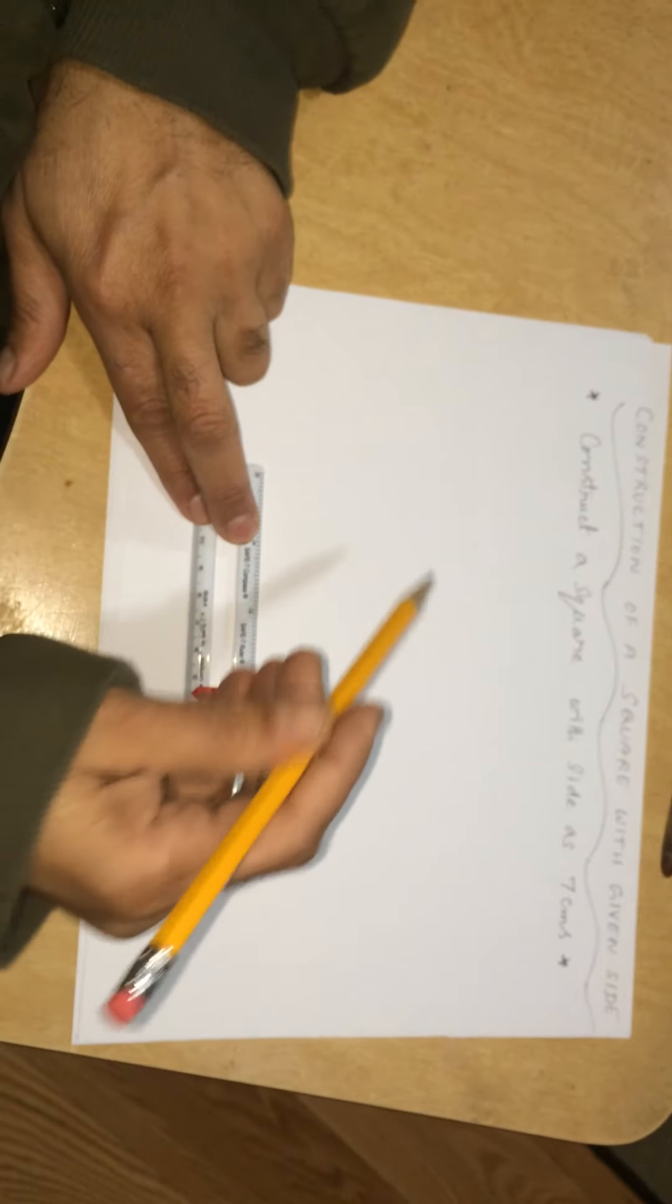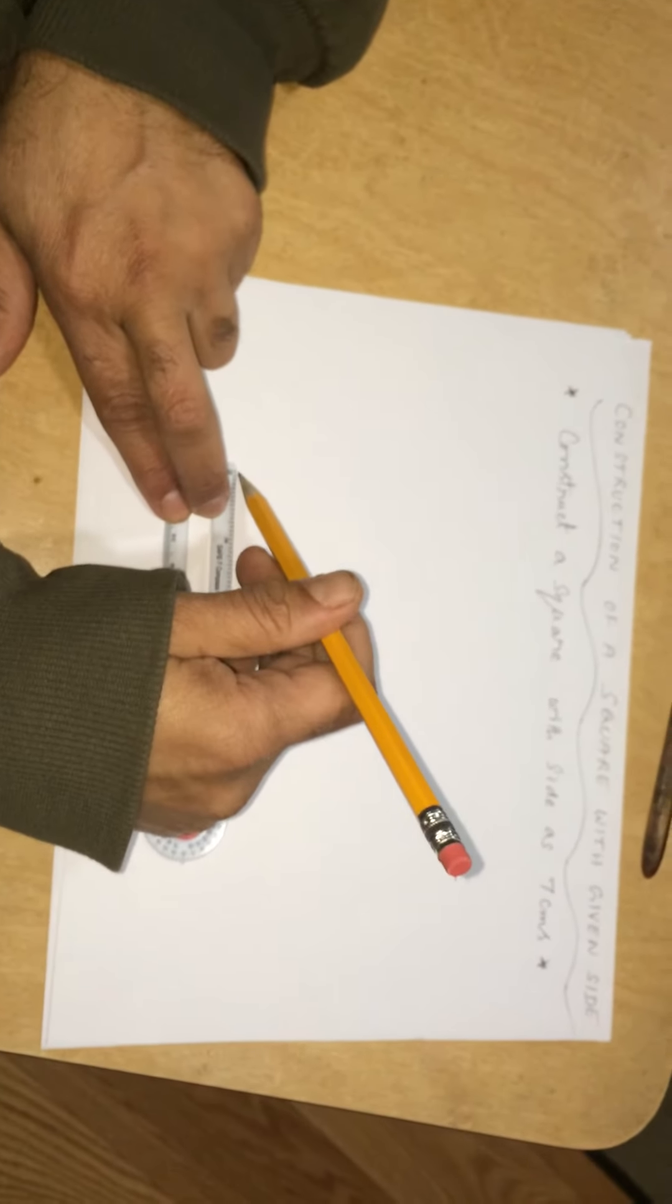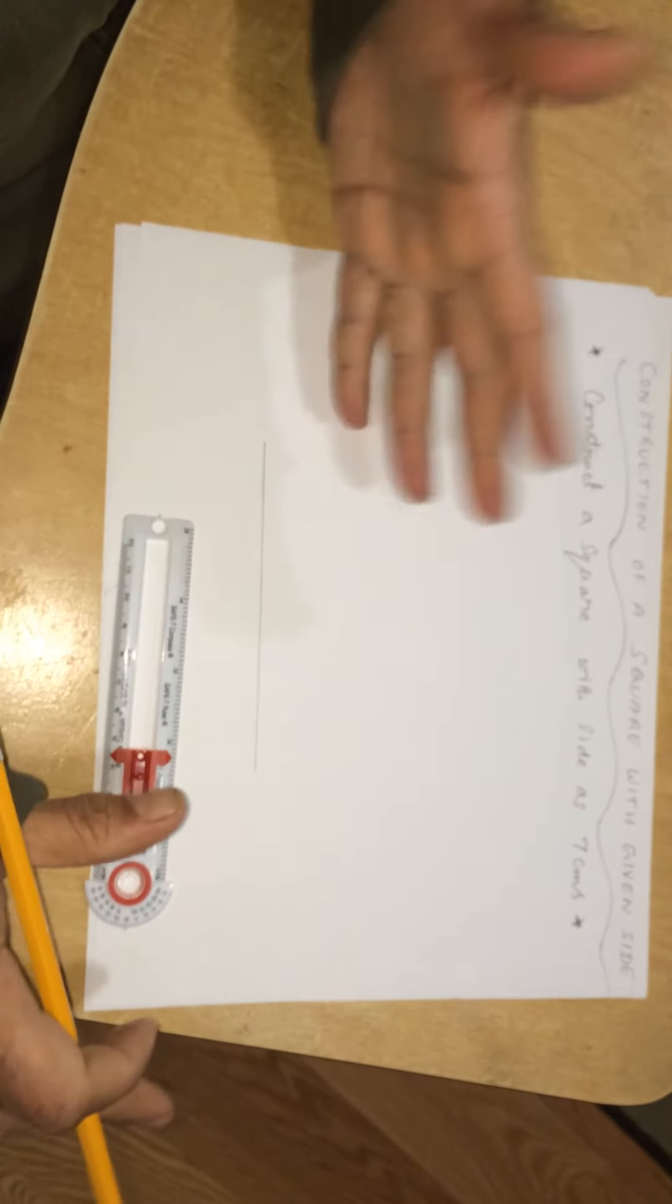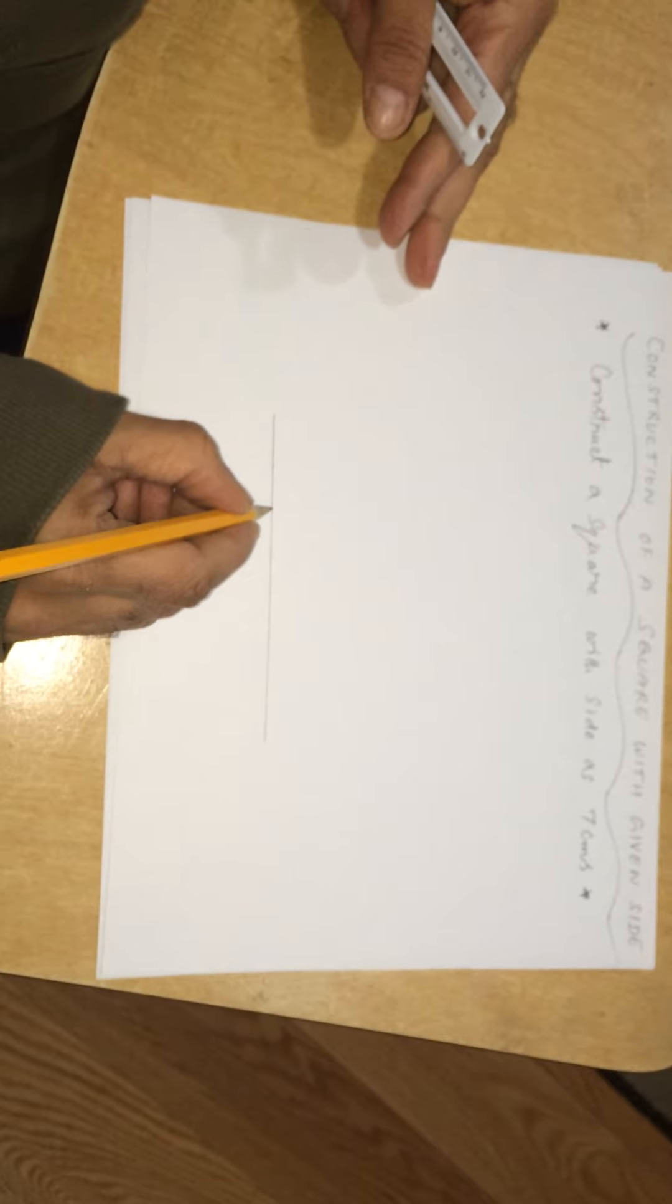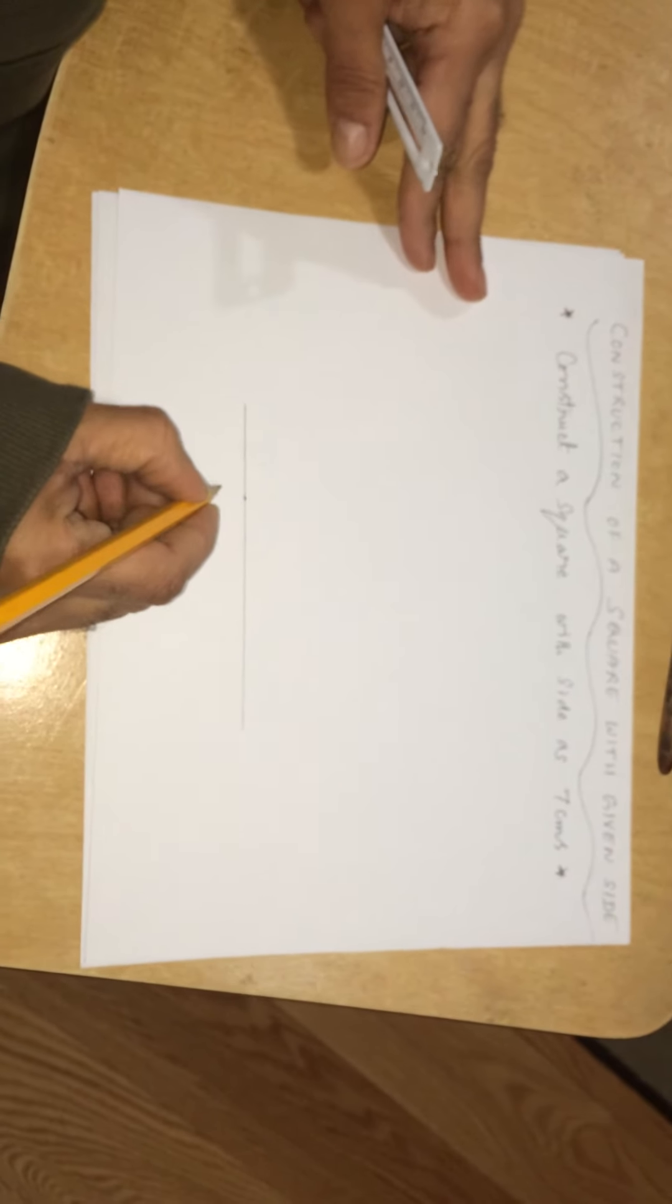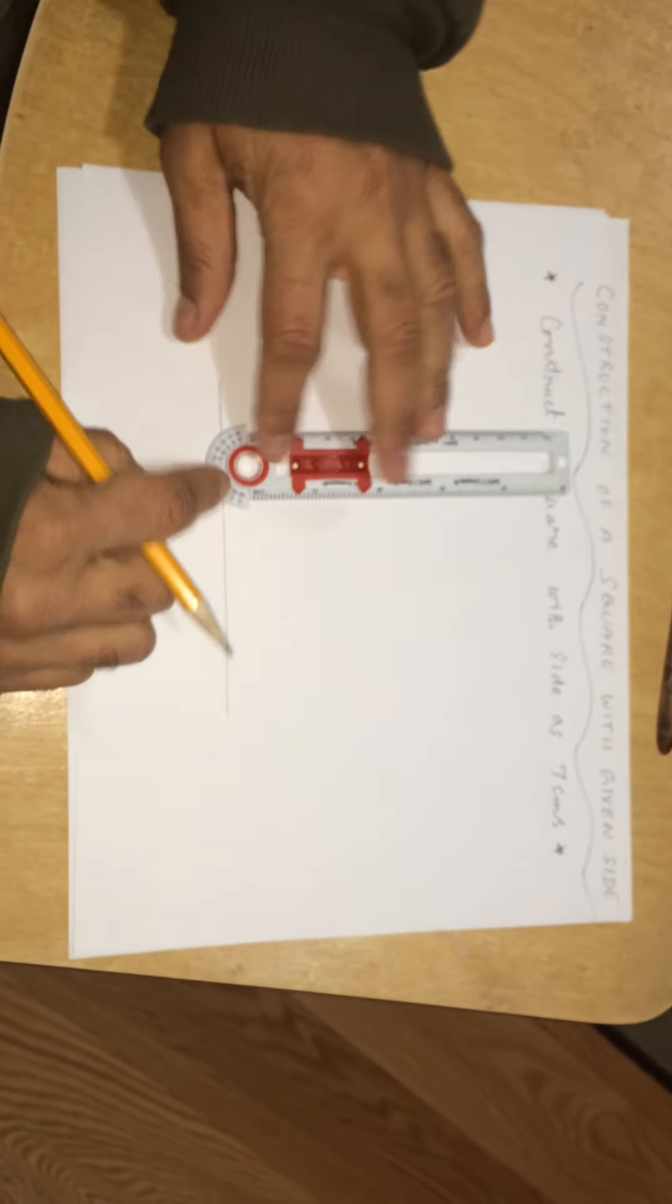Whatever the length of the side, first we draw a line segment like this. There is no restriction on the length, just approximately I drew one line. Then, at this part, I put a point and name it as A.